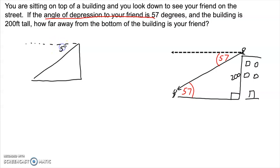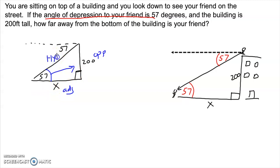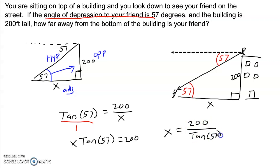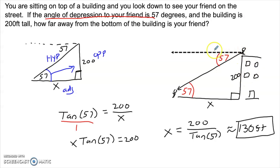We can extract all that information into just a pure triangle. We're trying to find how far away from the bottom of the building our friend is. Starting at the 57-degree angle, across from it is the opposite side — 200 feet. The adjacent side is x. So this is another tangent problem: tangent of 57 equals 200 over x. That gives us x times tangent of 57 equals 200, so x equals 200 divided by tangent of 57, which is approximately 129.88, about 130 feet.